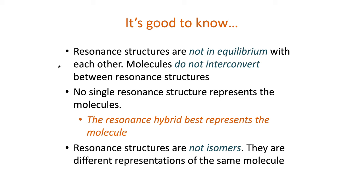Here are some reminders before we go on. Resonance structures are not in equilibrium with each other, so molecules do not interconvert between resonance structures. No single resonance structure represents the molecules. The resonance hybrid best represents the molecule. Resonance structures are not isomers. They are different representations of the same molecule.